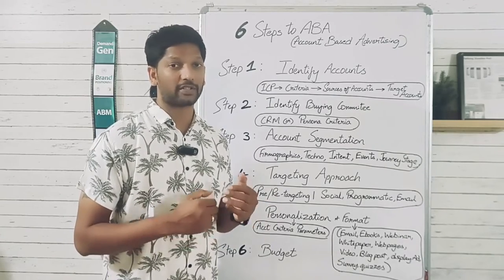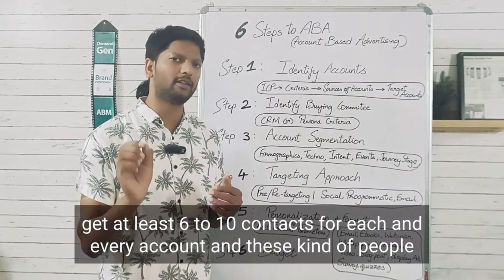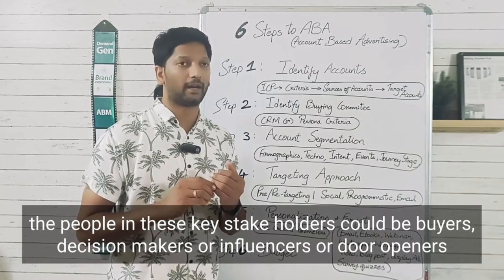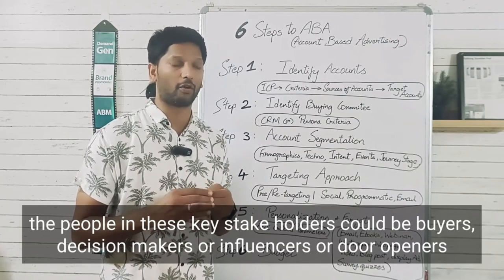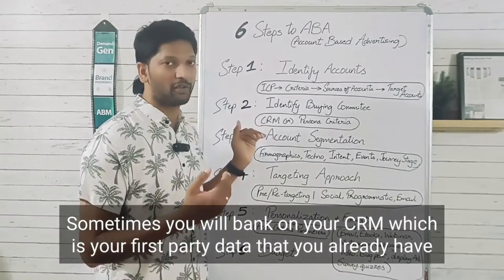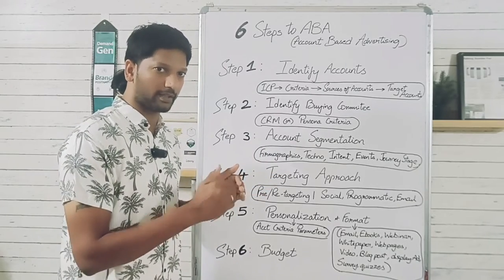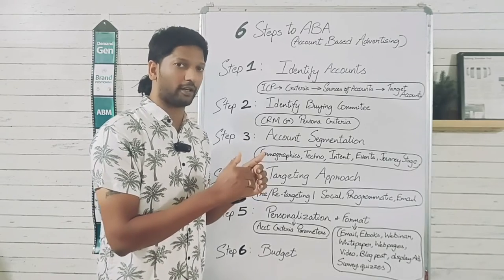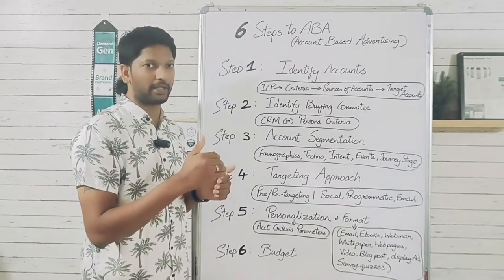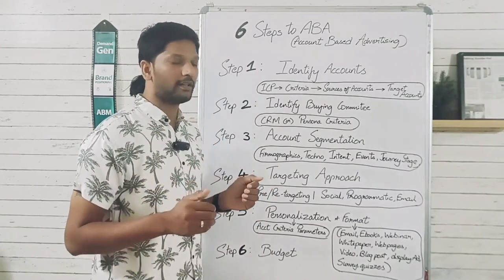The second step is identifying the key stakeholders of all these accounts. We typically try to get at least six to ten contacts per account. These key stakeholders could be buyers, decision makers, influencers, or door openers. Sometimes you'll rely on your CRM — your first-party data — to identify people you already know in these organizations. If not, you use your ICP or buyer personas to identify the right key stakeholders.